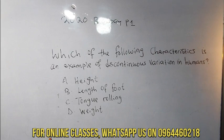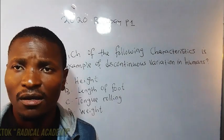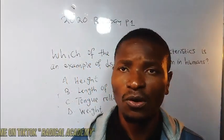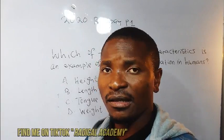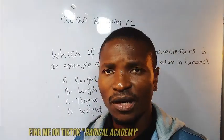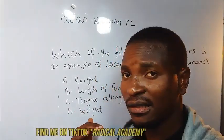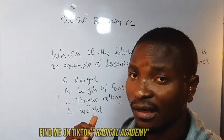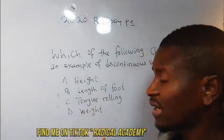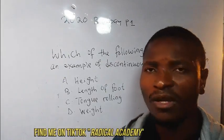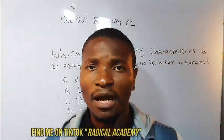The question says: which of the following characteristics is an example of discontinuous variation in humans? This is from a multiple choice 2021 Biology Paper 1. The options are: A — height, B — length of the foot, C — tongue rolling, and D — weight.